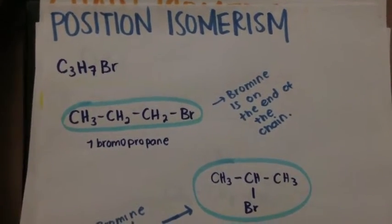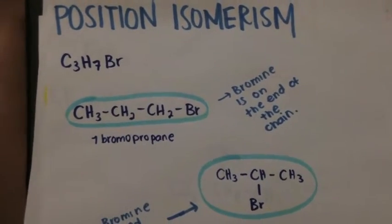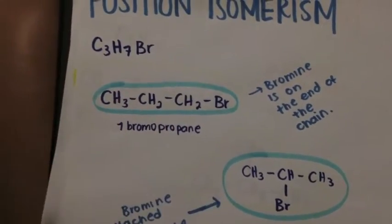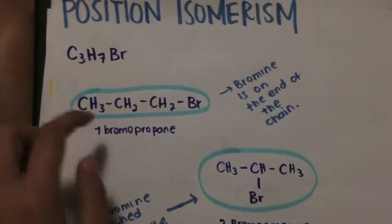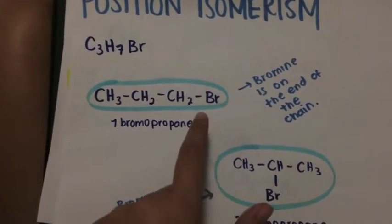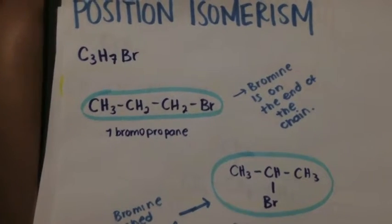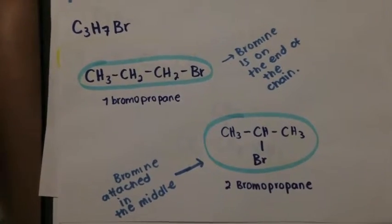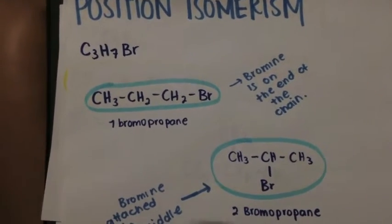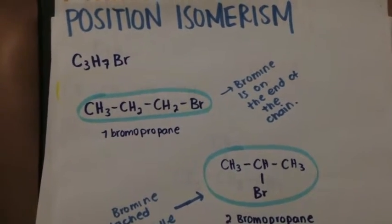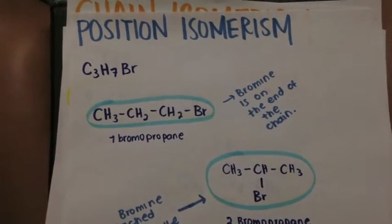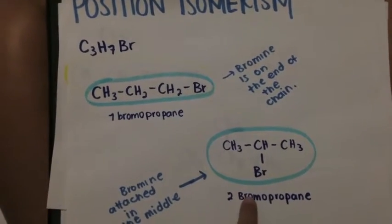The next type is positional isomerism. The basic carbon chain remains the same, but important groups move around the chain — in this case bromine, in C3H7Br. Here it is 1-bromopropane, and here it is 2-bromopropane, because in the first the bromine is on the end of the chain, and in the second the bromine is in the middle of the chain.